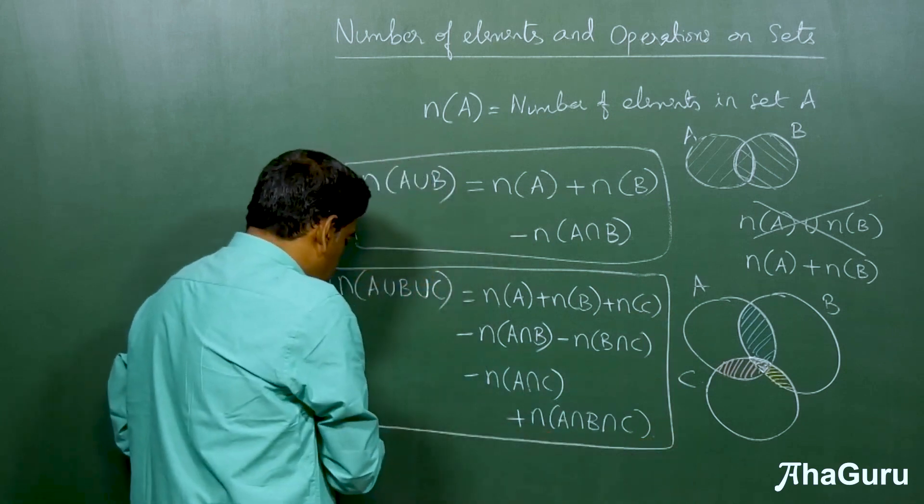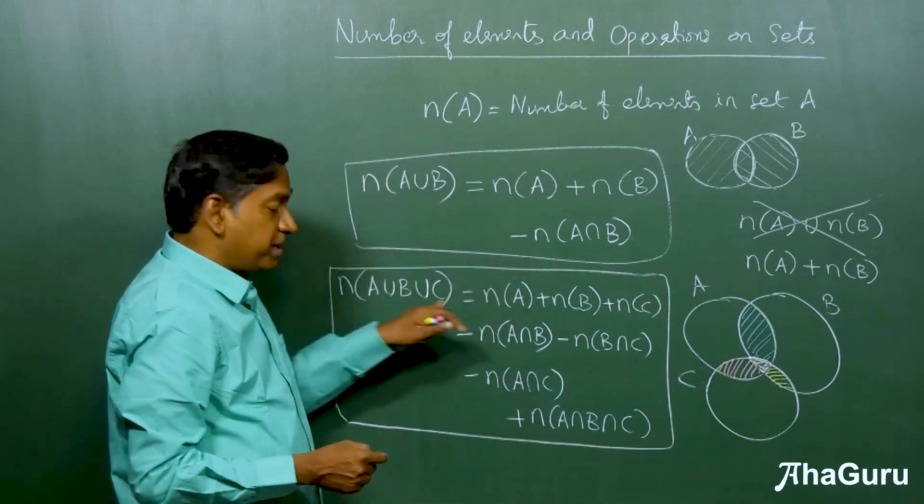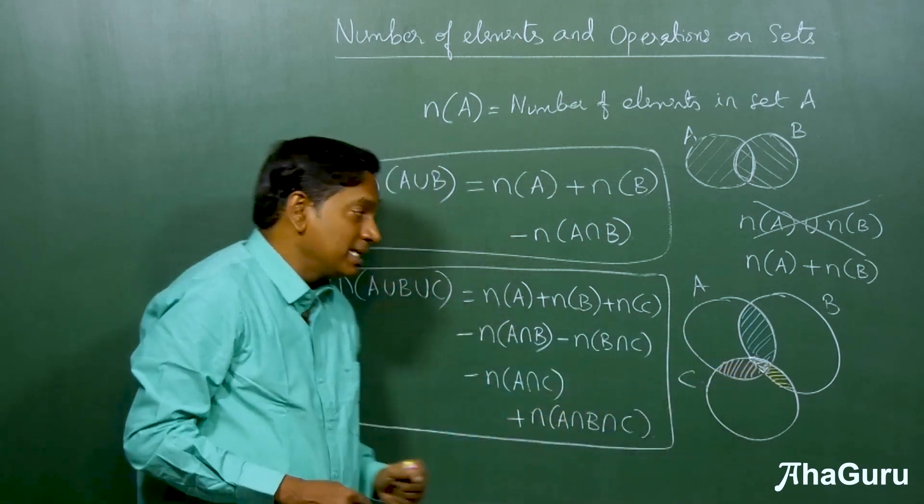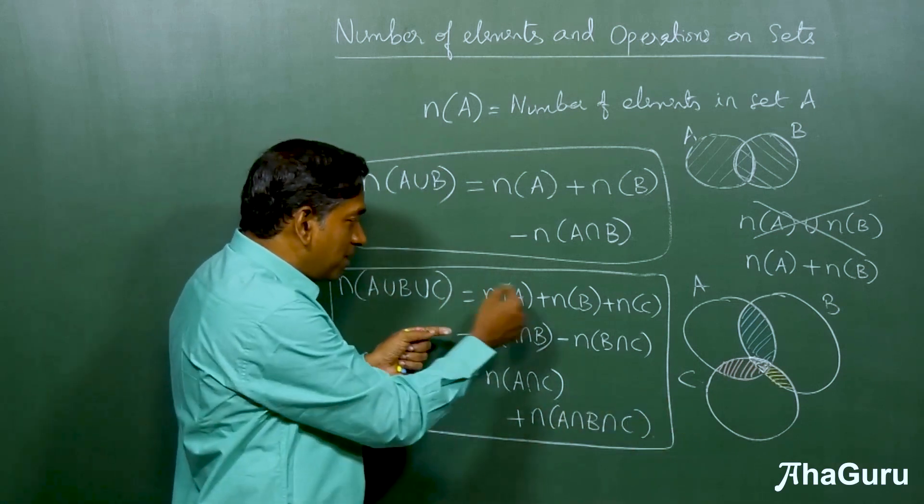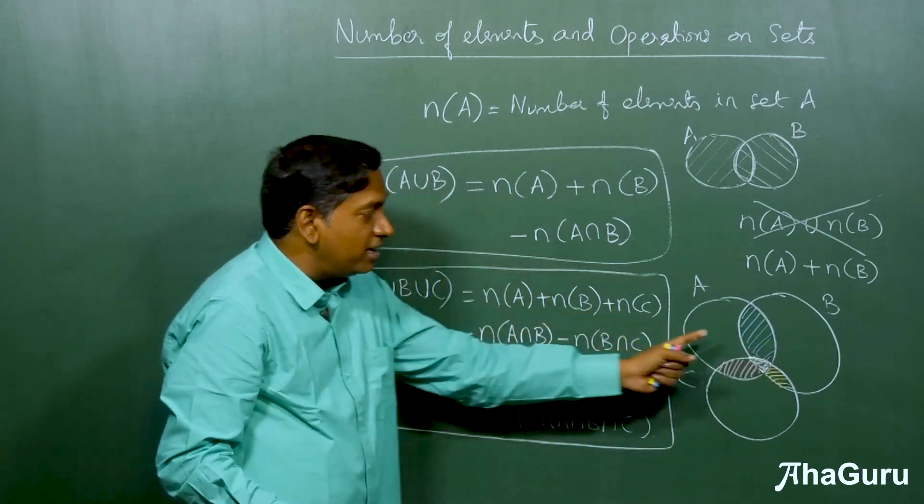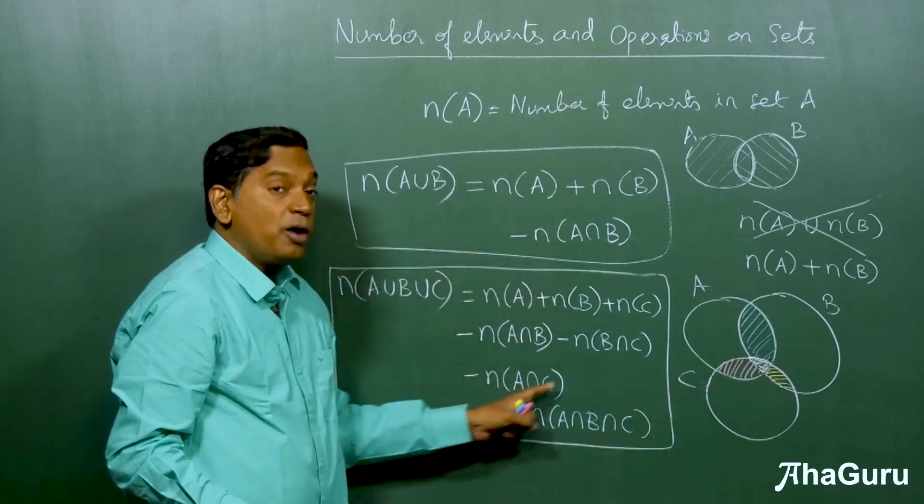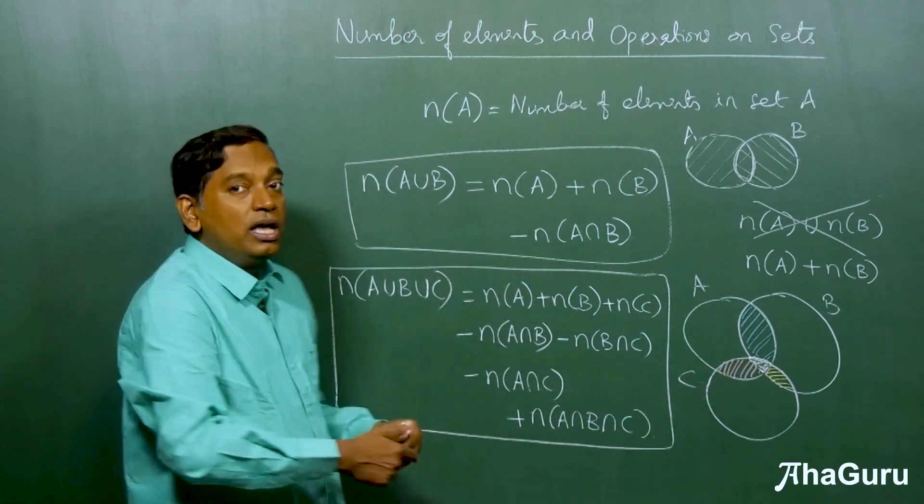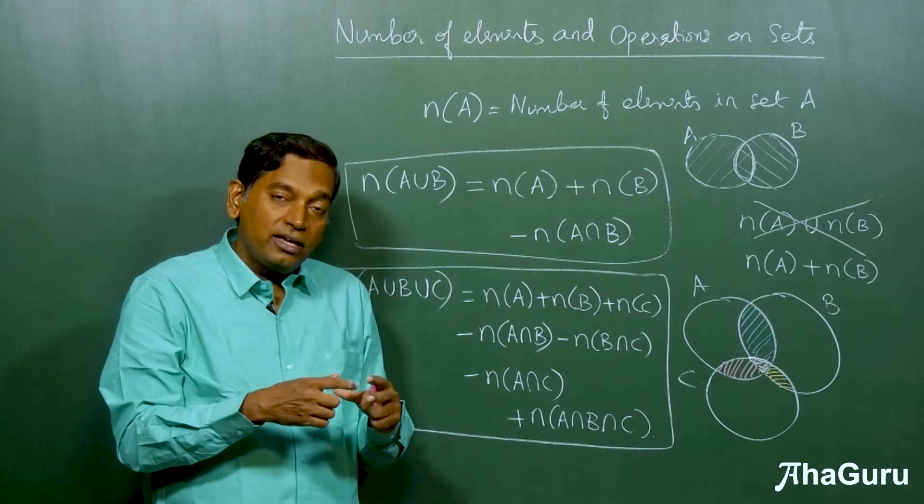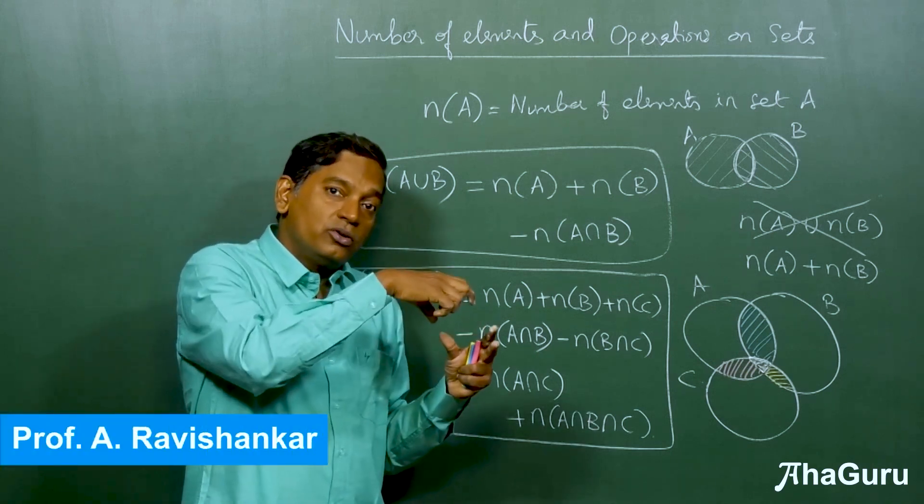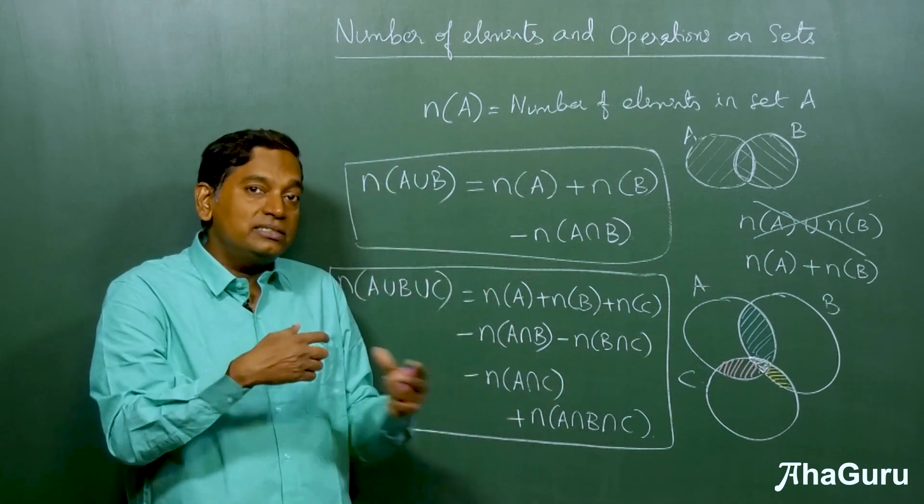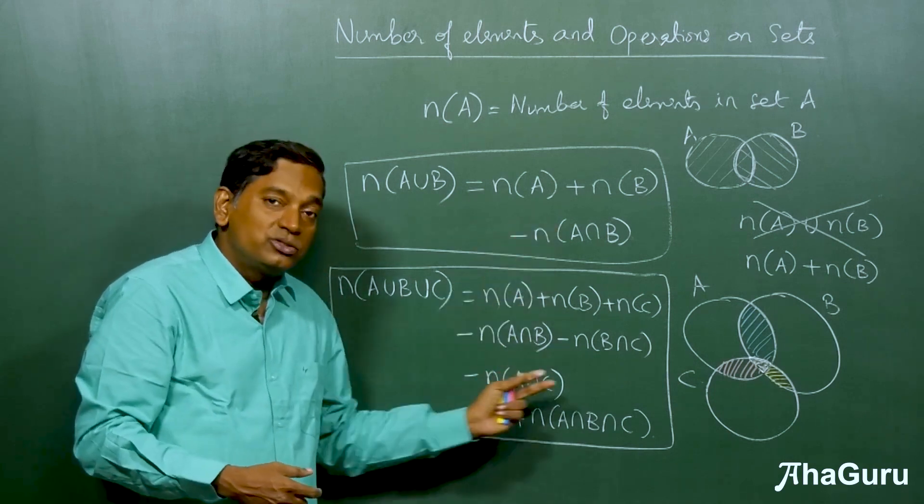Therefore, the final term here is to add n(A intersection B intersection C). So this is the expression for the number of elements in the union of three sets as a sum or difference of the number of elements in the individual sets as well as what is there in pairwise intersection as well as common intersection. These two are extremely useful to solve practical problems, word problems where you have situations where you have so many students interested in subject A, then subject B, then both subjects etc. These kind of problems can be solved using these two expressions.